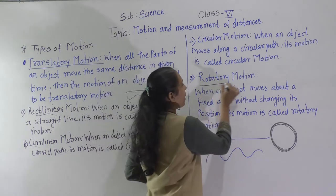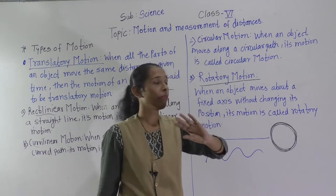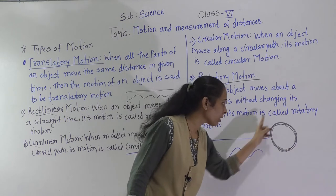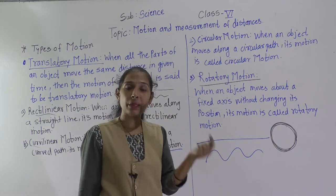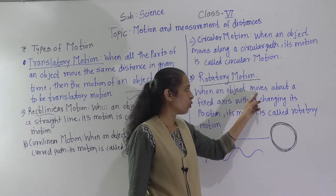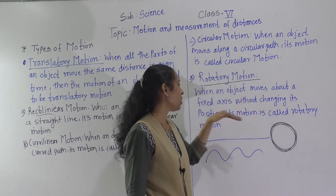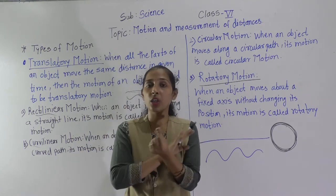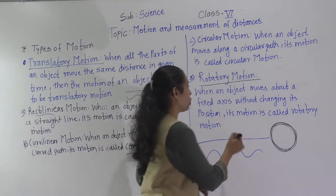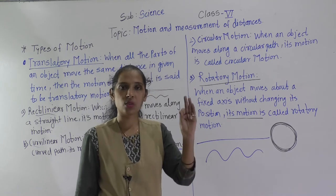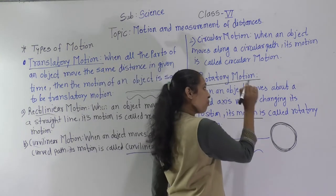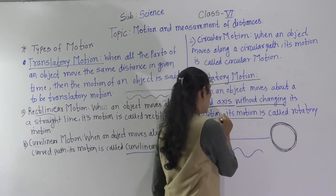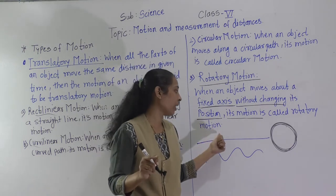Next is Rotatory Motion. There is a very minor difference between circular motion and rotatory motion, so don't get confused. When an object moves about a fixed axis without changing its position, that motion is called Rotatory Motion. The object moves along its axis but does not change its position at all.